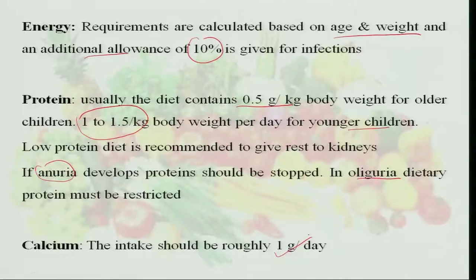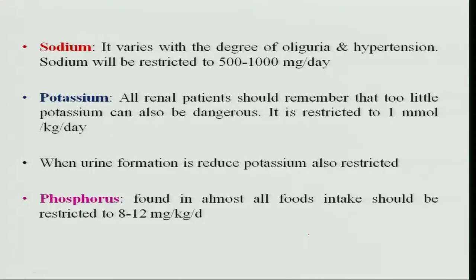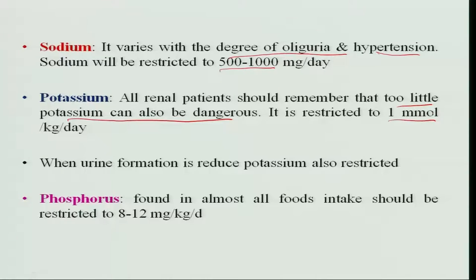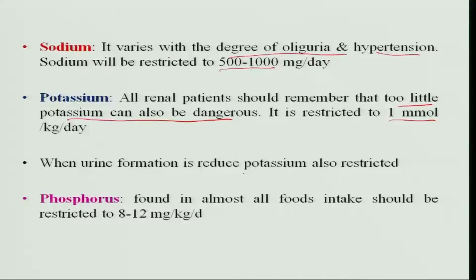Calcium intake must be 1 gram per day to ensure adequate absorption. Sodium varies with the degree of oliguria and hypertension, and should be restricted to 500 to 1000 milligrams per day. Potassium must be restricted to 1 millimole per kg per day, as both too little and too much potassium can be dangerous, since it is related to muscle contractions including the heart. Phosphorus, which is widely present in most foods, should be restricted to 8 to 12 milligrams per kg body weight per day.